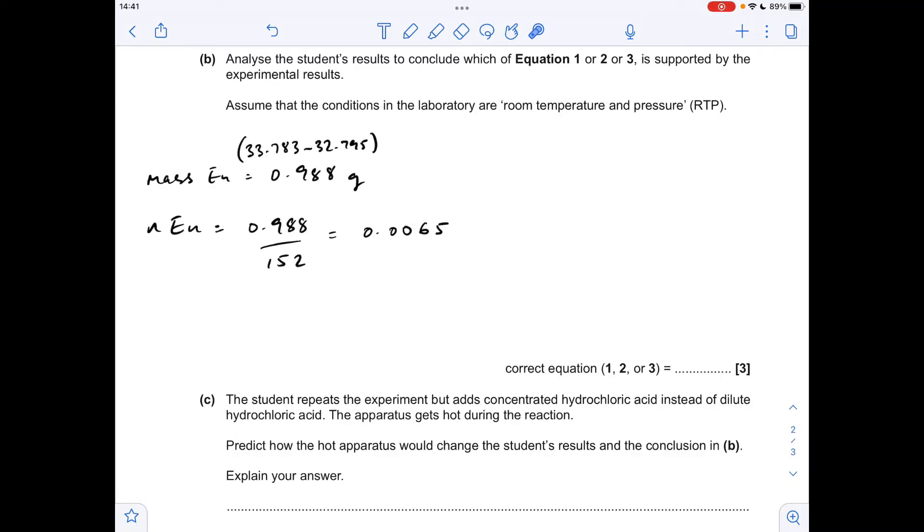So starting with the europium, the mass of europium comes out at 0.988 grams. Obviously from the two mass readings it's the difference between those. So that means the moles of europium, mass over MR, is 0.0065.